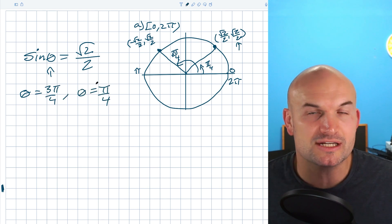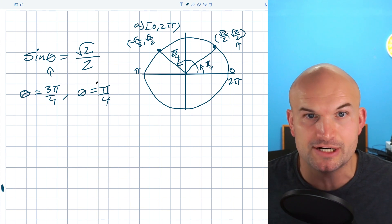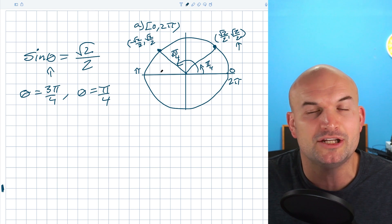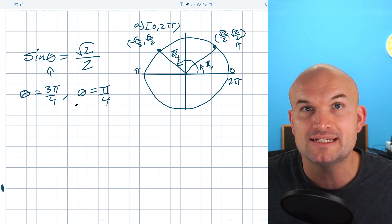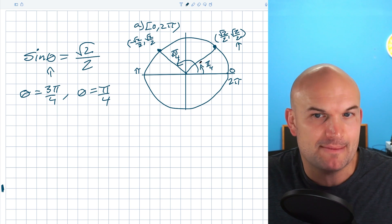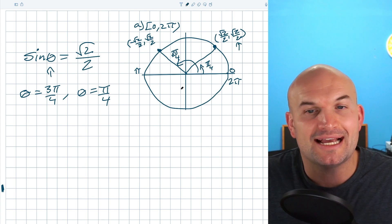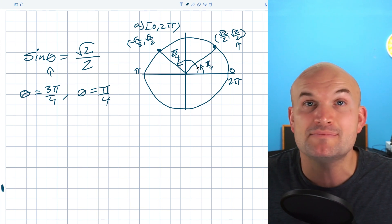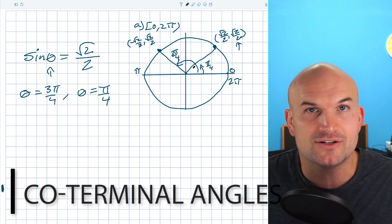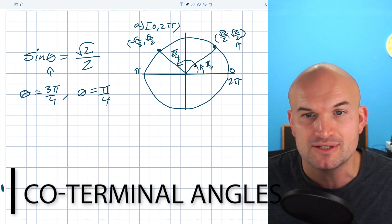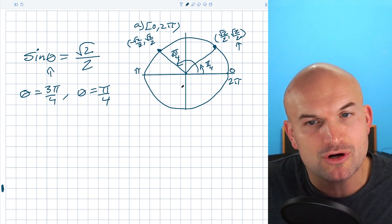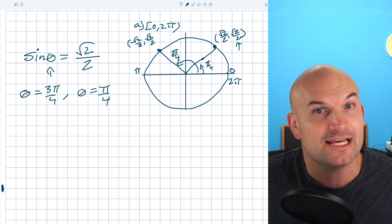Now again, these are just the solutions on the interval of 0 to 2π. We could also include all solutions by adding 2π to both of these solutions any number of times, because taking a solution like π/4 and adding 2π can be done infinitely many times — what that produces is what we call co-terminal angles: angles that have the same initial as well as terminal side. Adding or subtracting 2π takes you back to the same angle.